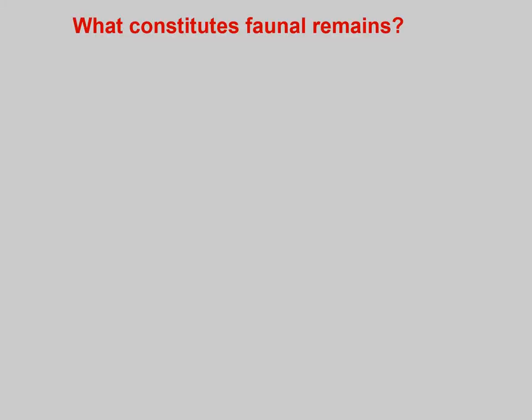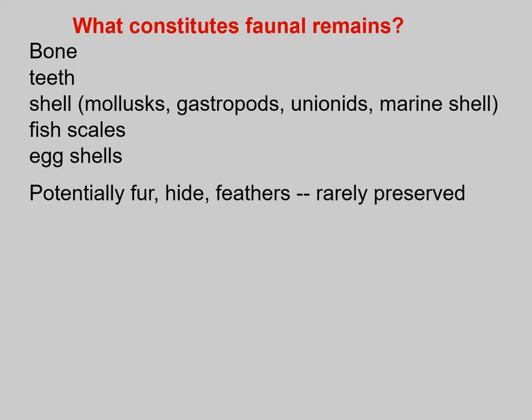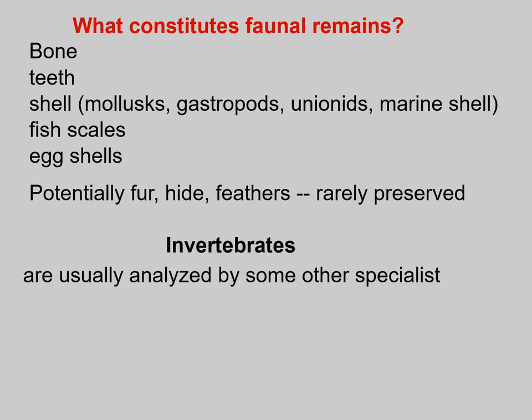What constitutes faunal remains? Bone comes to mind immediately, but also teeth, all kinds of shells — whether marine shells, riverine shells, or inland land shells — fish scales, egg shells, and potentially even fur, hide, and feathers, although these are rarely preserved. Invertebrates are also a type of faunal remain, but they're usually analyzed by some other specialist.